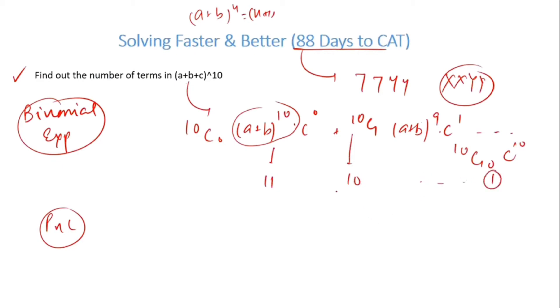So this becomes one. Number of terms will be 1 + 2 + ... + 11. That becomes 11 times 12 by 2, so this becomes 66.